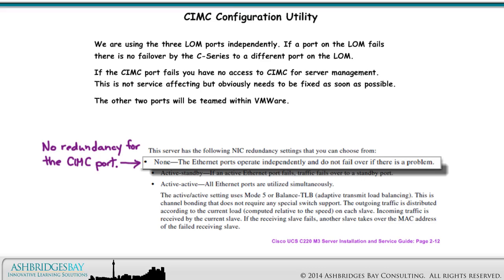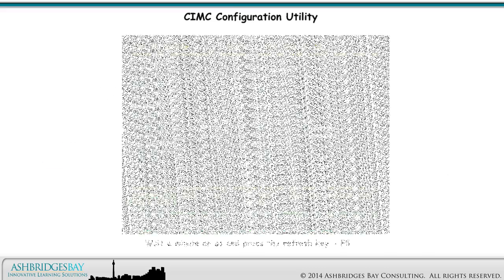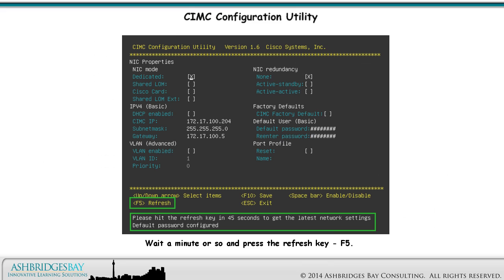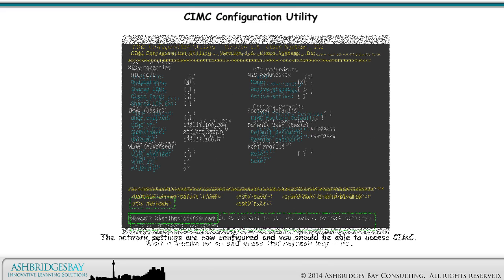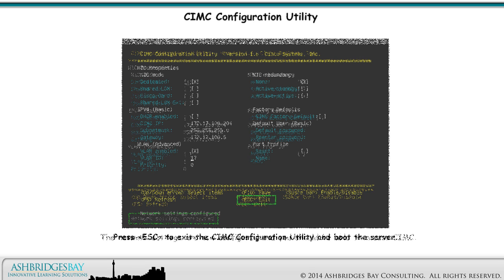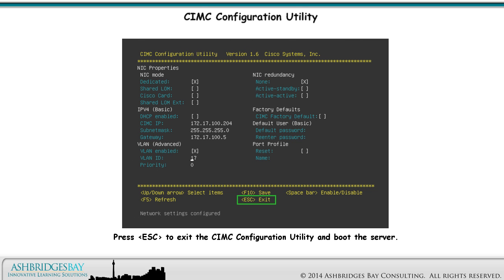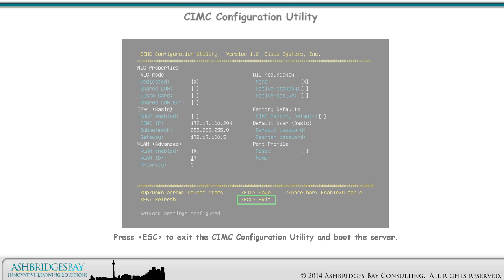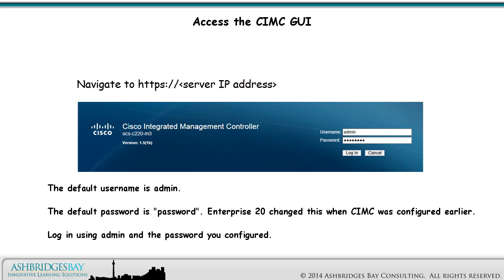The other two ports will be teamed within VMware. Wait a minute or so and press the refresh key, F5. The network settings are now configured and you should be able to access CIMC. Press ESC to exit the CIMC configuration utility and boot the server. Navigate to the server IP address to access CIMC. The default username is admin and the default password is password. Log in using admin and the password you configured.